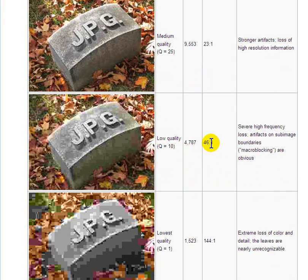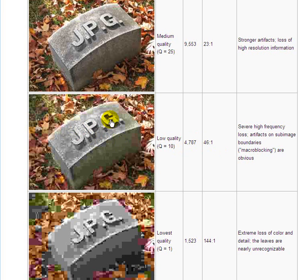Going even farther, compressing this down to a quality level of 10, we get 46 to 1 compression. We're down to only 4,700 bytes to store a file that started at 83,000 and in uncompressed form was over 200,000. So we've really achieved a great deal of compression here, but this picture is starting to look very fuzzy. You see the loss of precision around the initials. The leaves and the variety of things here probably don't matter that much, but the edge here is starting to distort too, and it's getting kind of blurry.